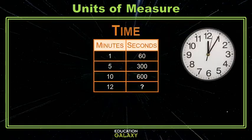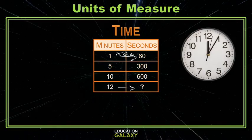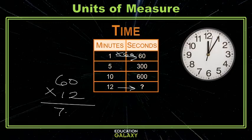Do you have the time for one more sample? Here we're going to do minutes and seconds. To get from minutes to seconds, we need to multiply by 60. So to get from 12 minutes to seconds, we multiply by 60. 60 times 12 is 720. So 720 seconds equals 12 minutes. There you have it — you too can convert units of measure!